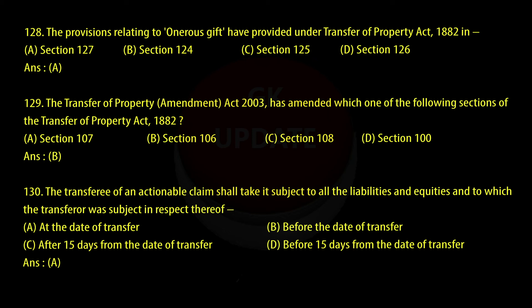Question 129: The Transfer of Property Amendment Act, 2003 has amended which one of the following sections of the Transfer of Property Act, 1882? A: Section 107. B: Section 106. C: Section 108. D: Section 100. Answer: B.